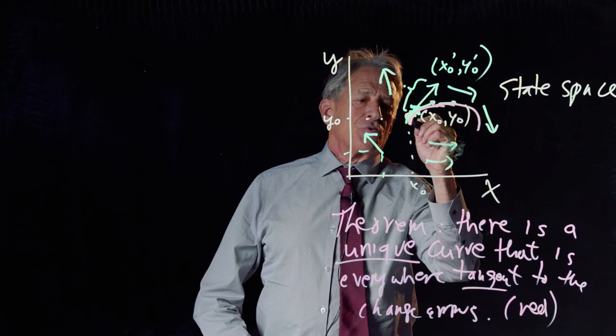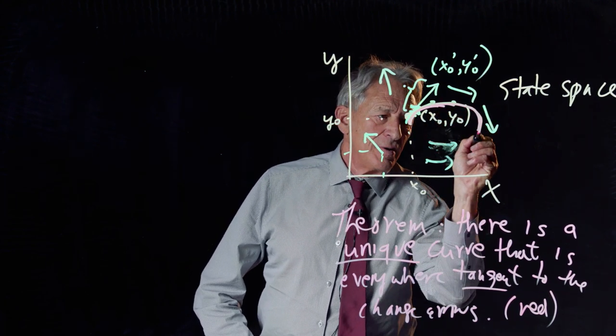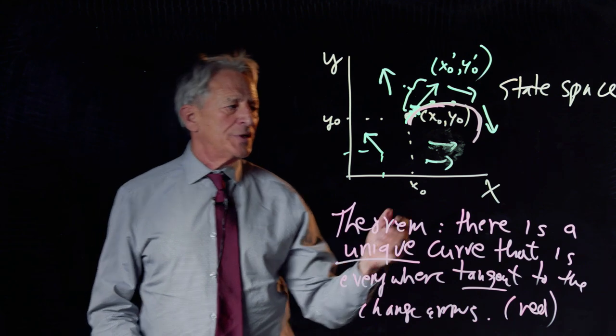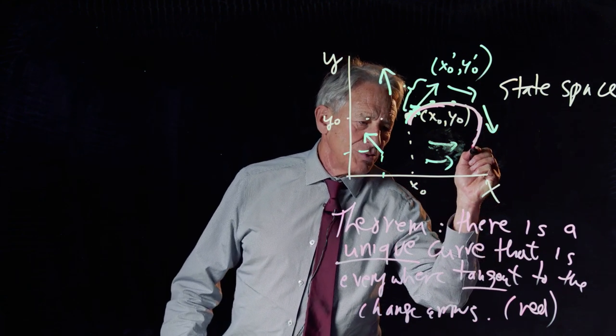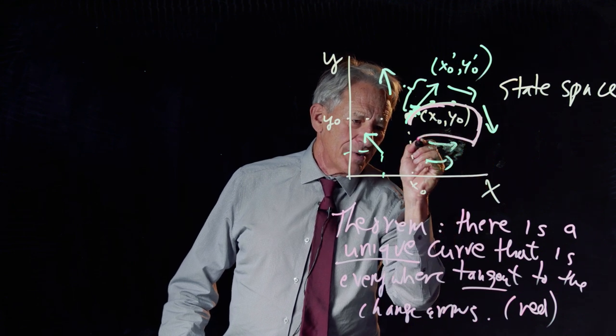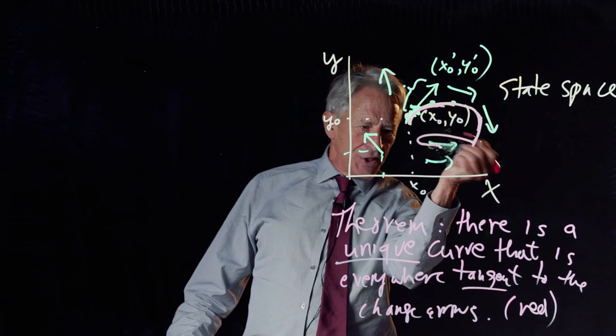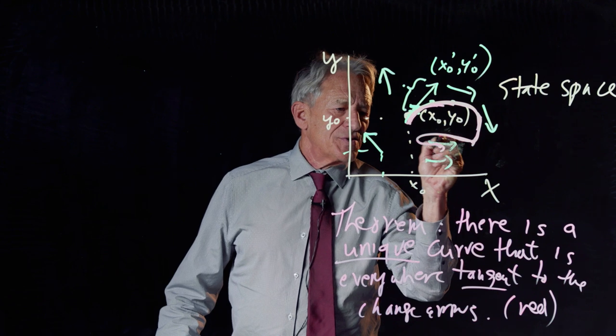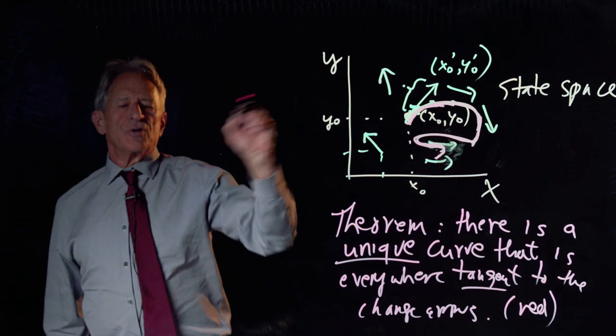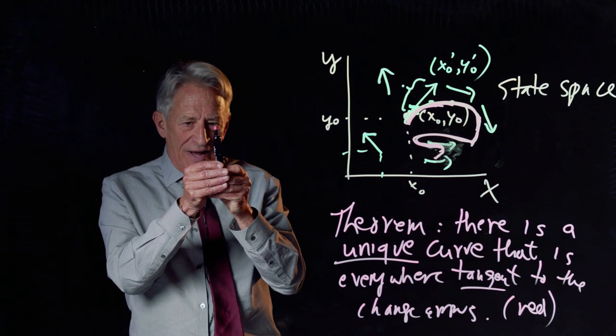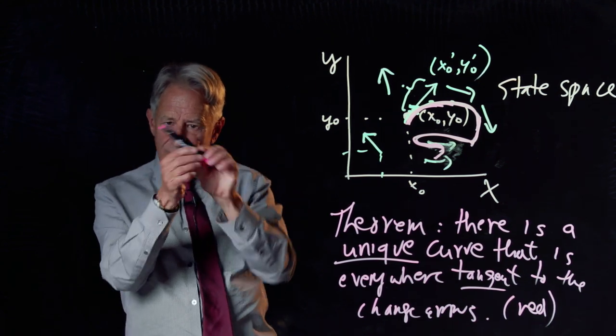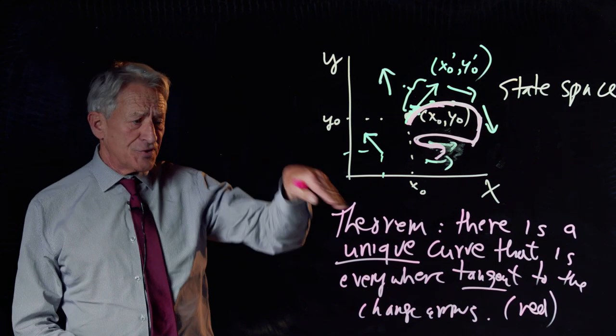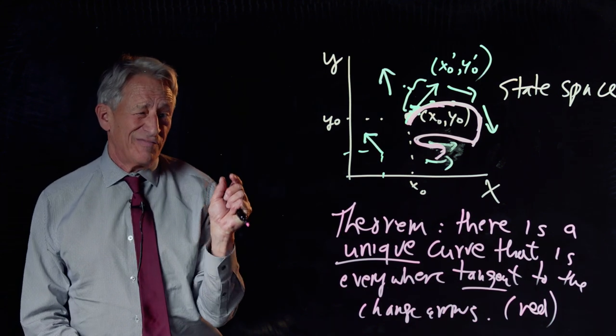And this creates a red curve that is, in a certain sense, the solution to this equation. It is the curve that is traced out. Now, if I want this change arrow to go there, I better get back this way. And there had better be change arrows taking me back that way. And the theorem guarantees us that there is a single, unique curve that is everywhere following the change arrows and that is everywhere tangent to the change arrows.